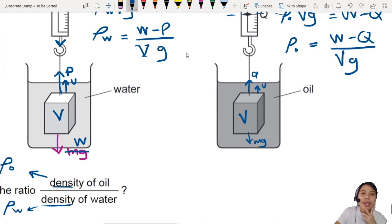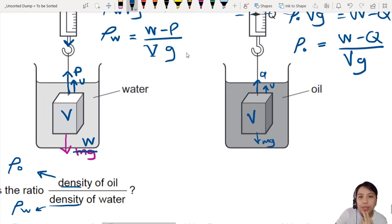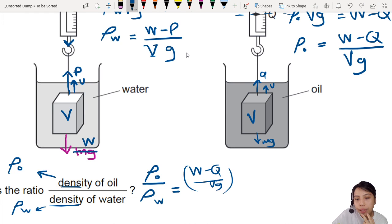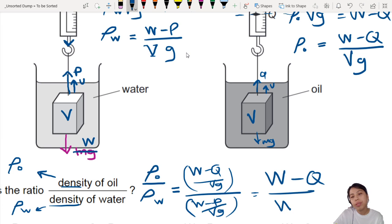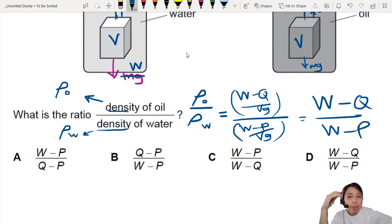Do you see where we're going? We're almost there. Now we can find the ratio. The ratio ρ_O over ρ_W will be W minus Q over Vg divided by W minus P over Vg. Vg and Vg cancel out. So what do you have? W minus Q over W minus P. That's what we have. D is the answer.